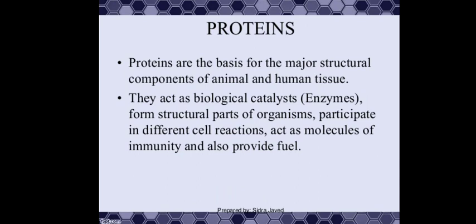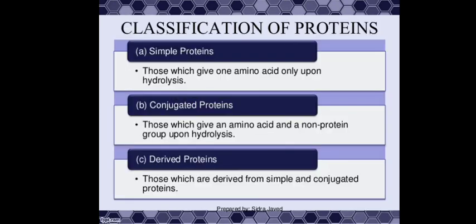First, we will see the classification of proteins depending on their composition. The proteins are classified into three groups: simple proteins, conjugate proteins, and derived proteins.